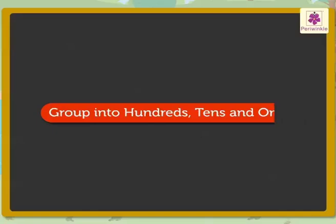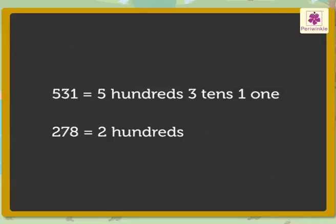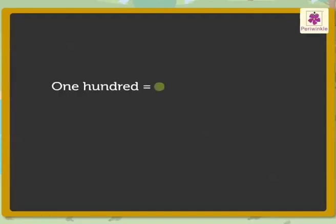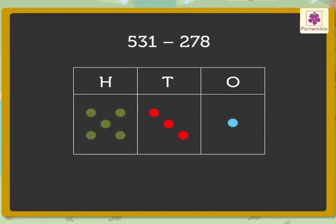Let us group both these numbers into hundreds, tens, and ones, and then subtract them. There are five hundreds, three tens, and one one for the frogs on the ground, and two hundreds, seven tens, and eight ones that jumped into the water. We will represent each hundred with a green dot, each ten with a red dot, and each one with a blue dot. Therefore, the number 531 will be represented like this with dots. Now let us cancel the dots equal to the digits in the subtrahend in each column, starting with the ones column first, then the tens column, and lastly the hundreds column.